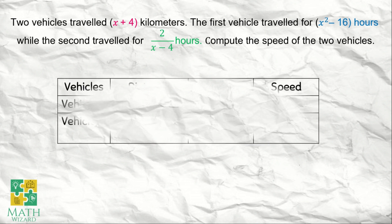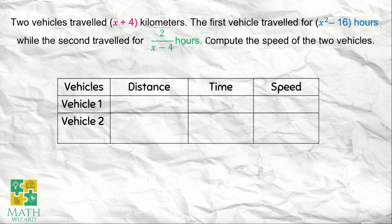Let's put up a table first. In this table, we have vehicle 1 and vehicle 2. We'll write the distance covered by vehicle 1, same with vehicle 2, the time traveled by vehicle 1, and the time traveled by vehicle 2. And we are looking for the speed of the two vehicles.